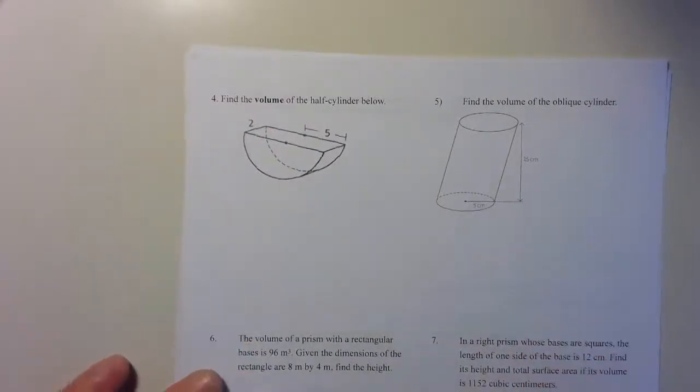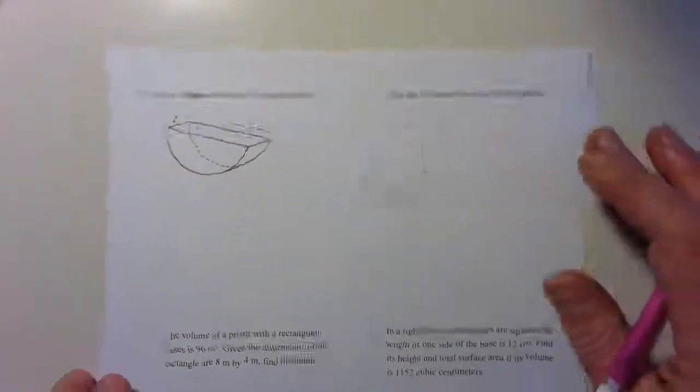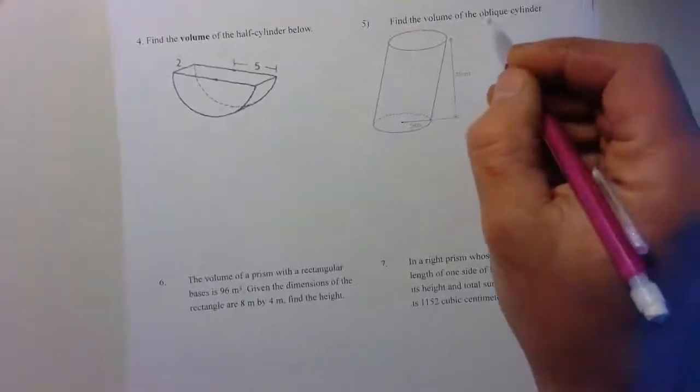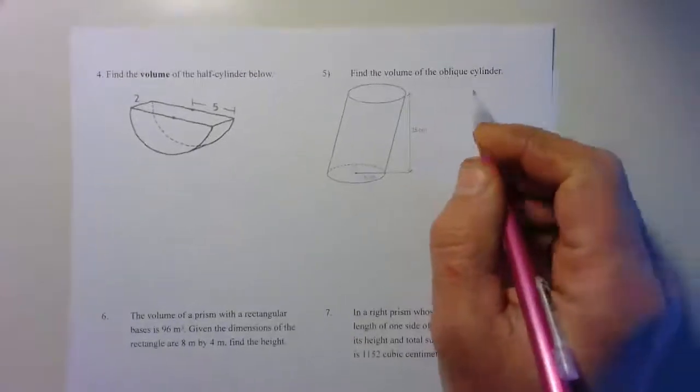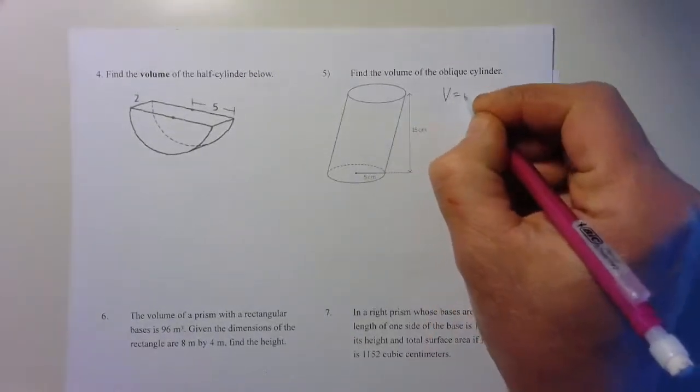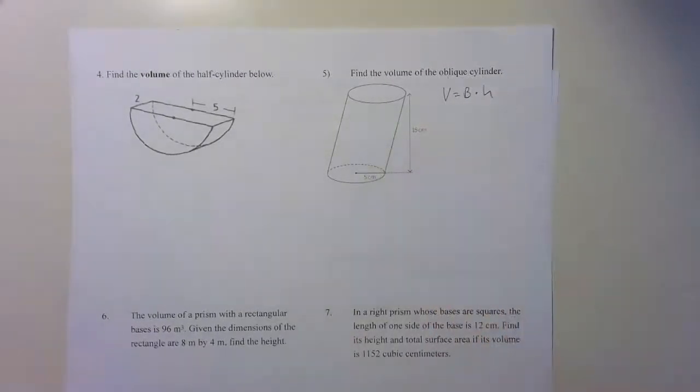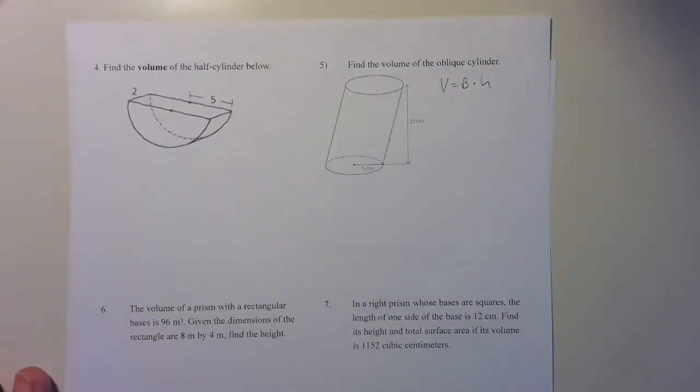This one is the volume of the oblique cylinder. Just because it's oblique doesn't change how you do the volume of it. Volume is area of the base times height. All you need to do is find the area of the base, multiply by the height, and you have the volume of the whole thing. That one doesn't have to be harder.